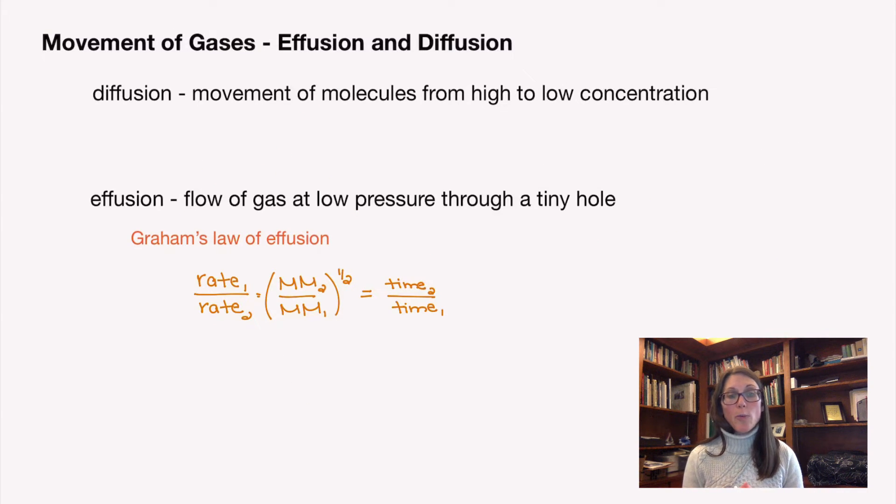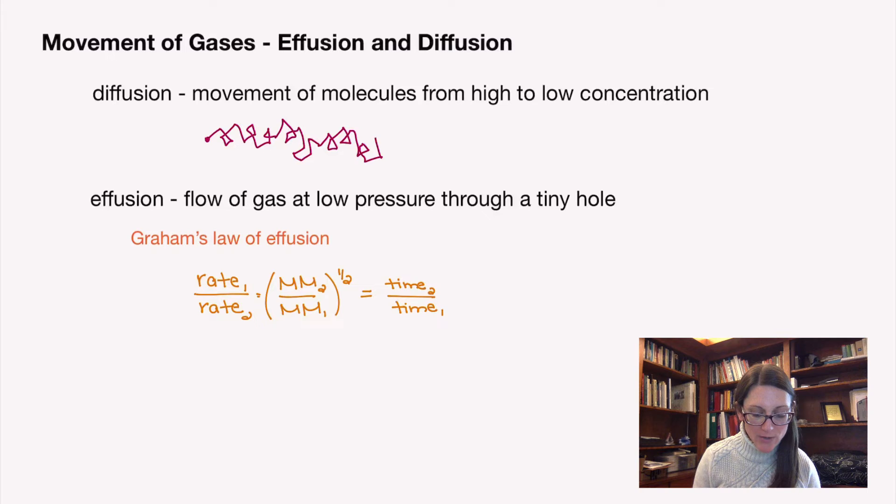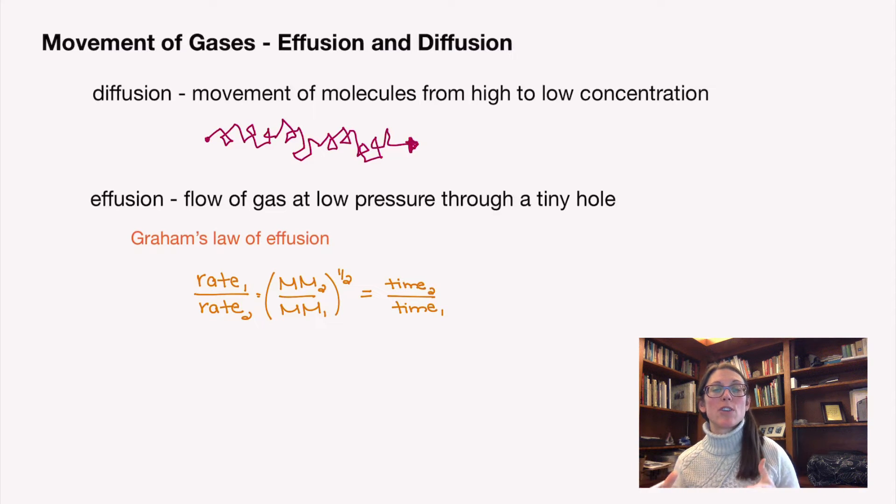The fact that your particles are moving and perhaps moving at different rates and different speeds has an impact on the motion of those gases. And the two motions I want to talk about briefly here are effusion and diffusion. Diffusion is the movement of molecules from high to low concentration. You're pretty familiar with this one. This is imagining you've got a perfume in a room and it's going to bounce its way to your nose. It doesn't get to travel in a straight line path because there's lots of particles that it's going to collide with on the way, but it's going to travel through the air. And that movement from high concentration to low is diffusion.